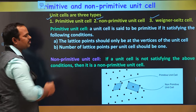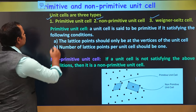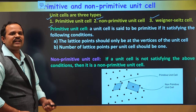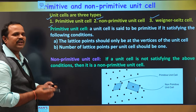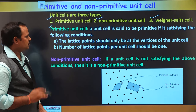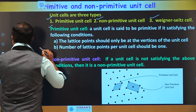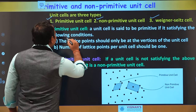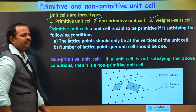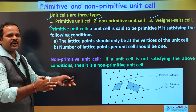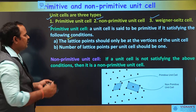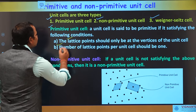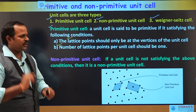The primitive unit cell has two conditions. The first condition is that the lattice points should be at the vertices of the unit cell. The second condition is that the number of lattice points per unit cell should be 1.